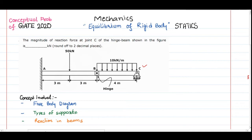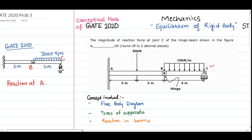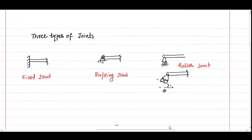This is a basic problem. A similar problem appeared in a previous GATE exam where the reactions at point A were asked; in the given problem you have to find the reactions at point C. Both problems are similar — if you understand how to make the free body diagram and calculate reactions, it won't be too difficult.